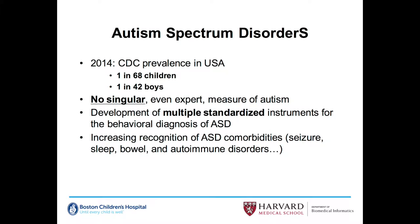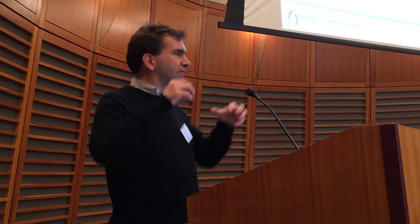In the context of autism spectrum disorders, it's not just one disease — autism is a spectrum. There's one boy out of 42 now in the US. Making the diagnosis is not one single event, not one lab value, not one expert — it's multiple standardized instruments for the behavioral diagnosis of autism. There's increased recognition of comorbidities that will help find the subgroup. Where are we today in the context of autism? We are like leukemia 200 years ago. We haven't found the subgroups of autism yet, and that's why there's no treatment.